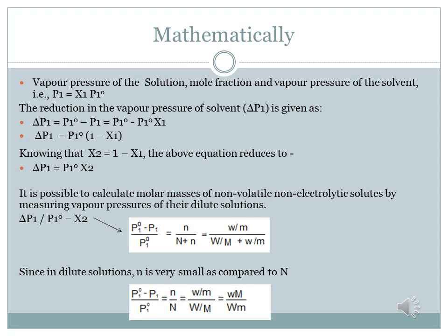It is also possible to calculate the molar mass of a non-volatile, non-electrolyte solute by measuring the vapor pressure of a dilute solution. Modifying the previous equation Δp₁ = p⁰₁ · x₂, we get Δp₁ / p⁰₁ = x₂. Expanding: (p⁰₁ − p₁) / p⁰₁ = x₂, where x₂ is the mole fraction of solute — that is, number of moles of solute divided by total number of moles (moles of solvent plus moles of solute).